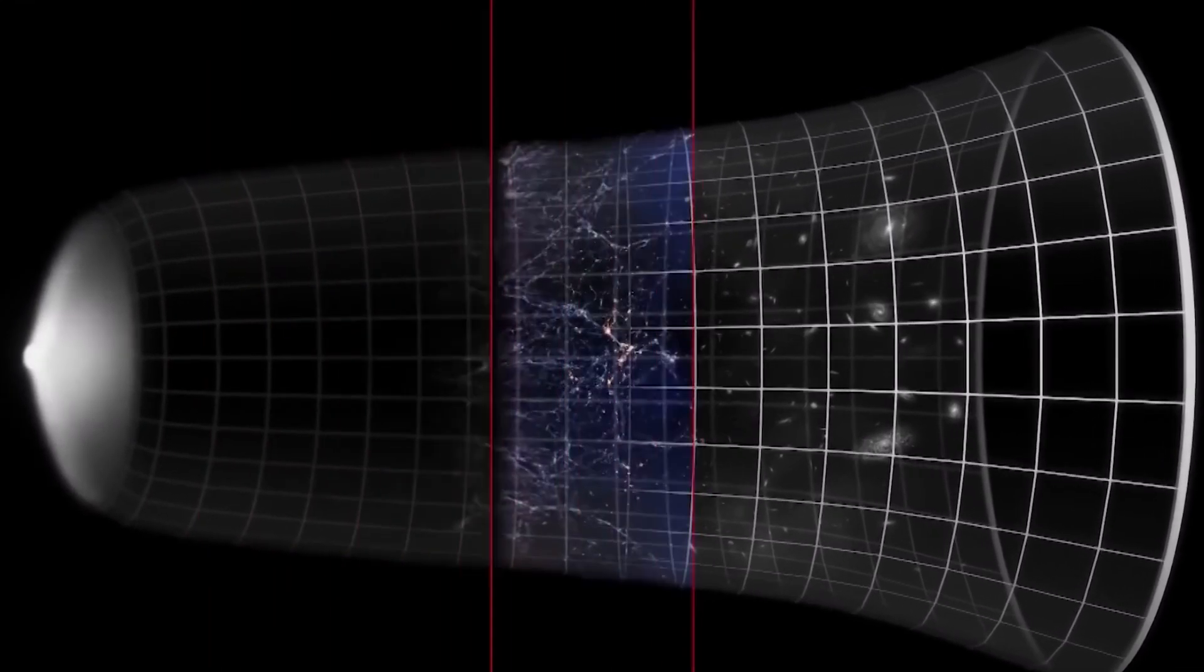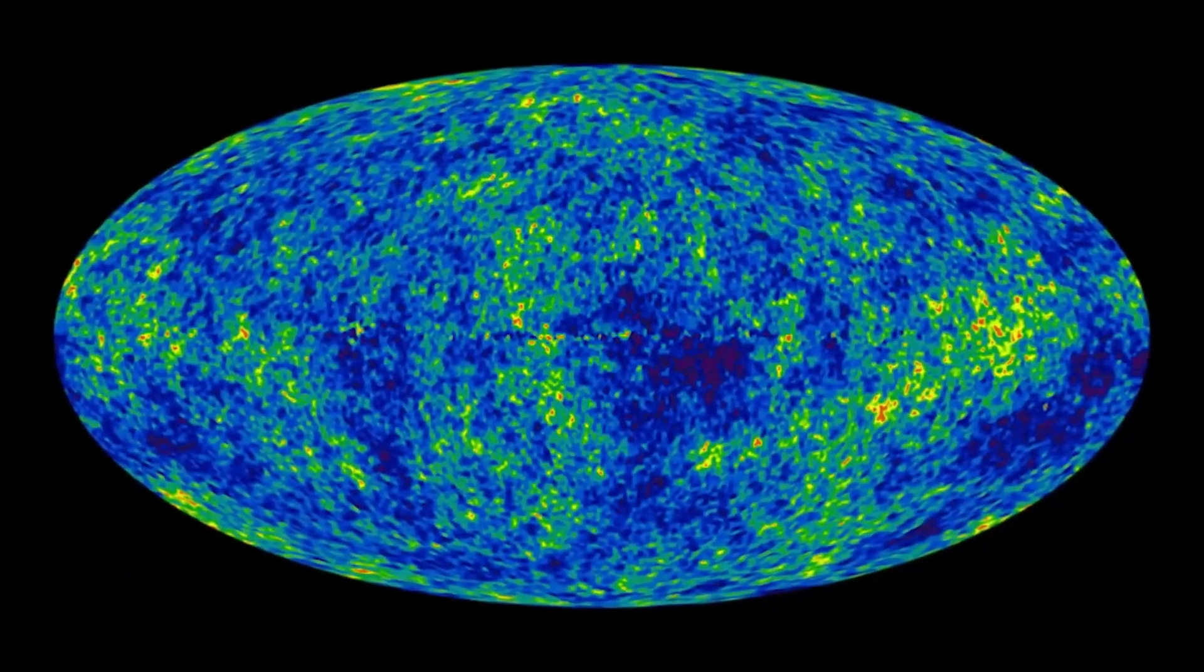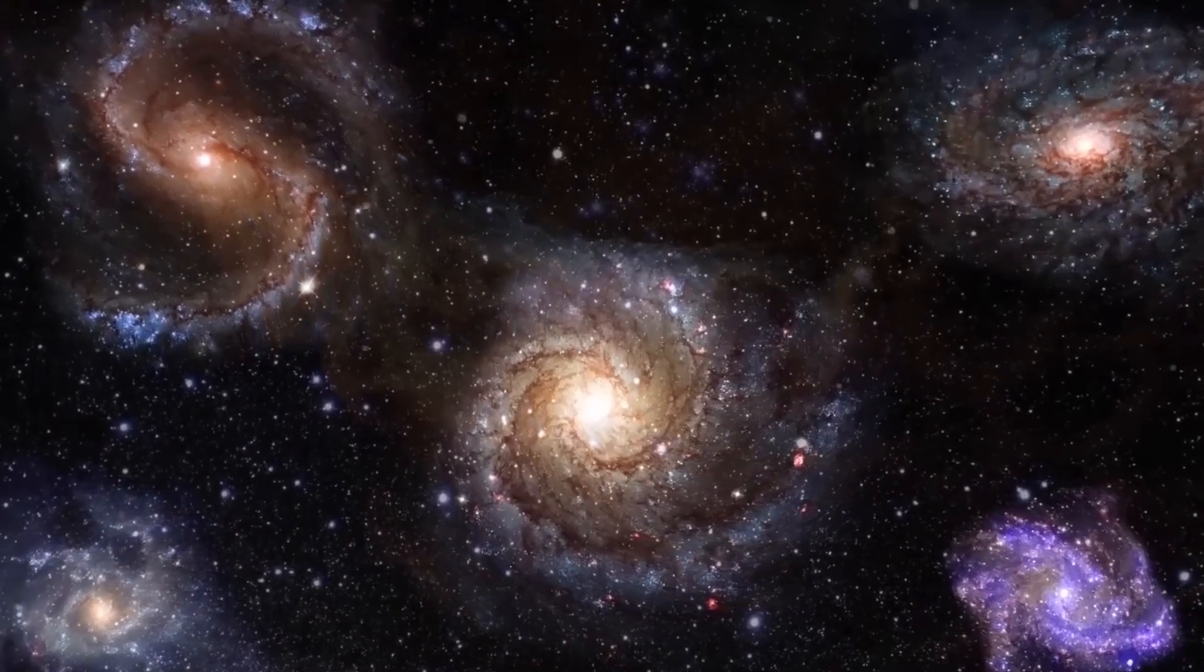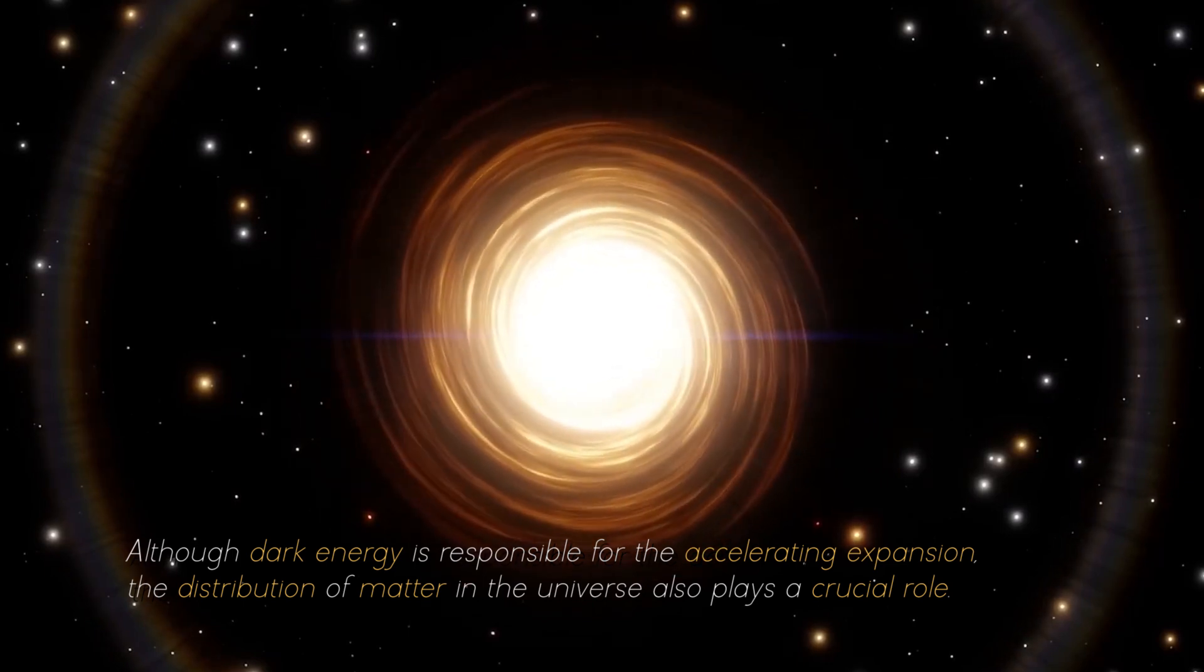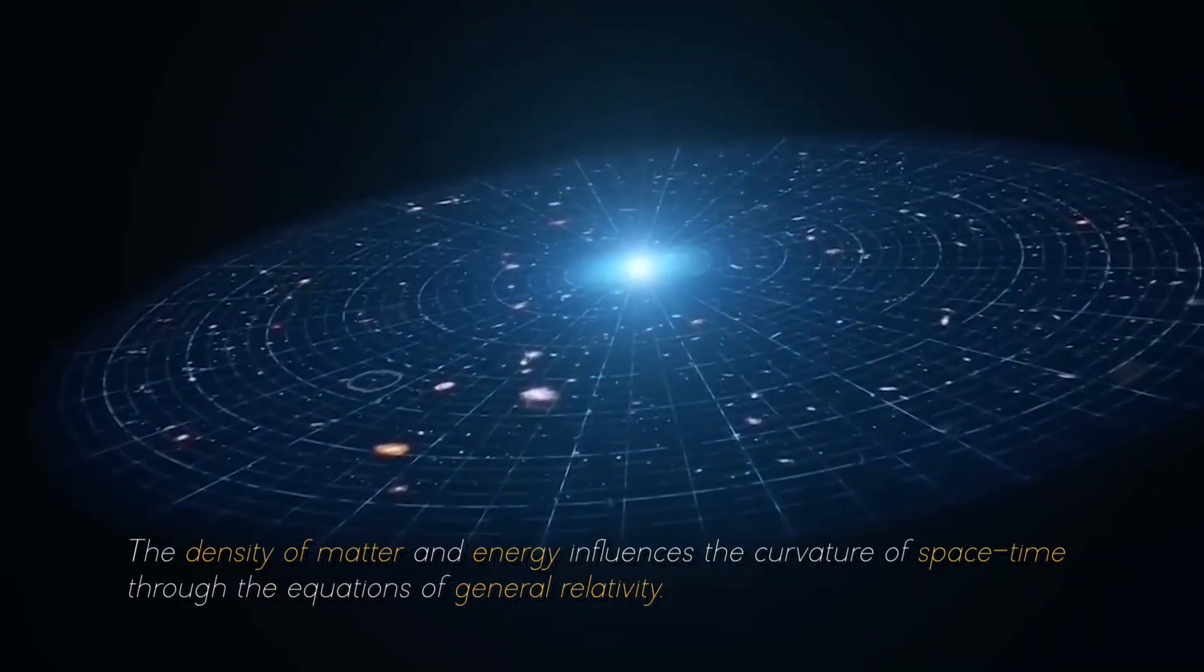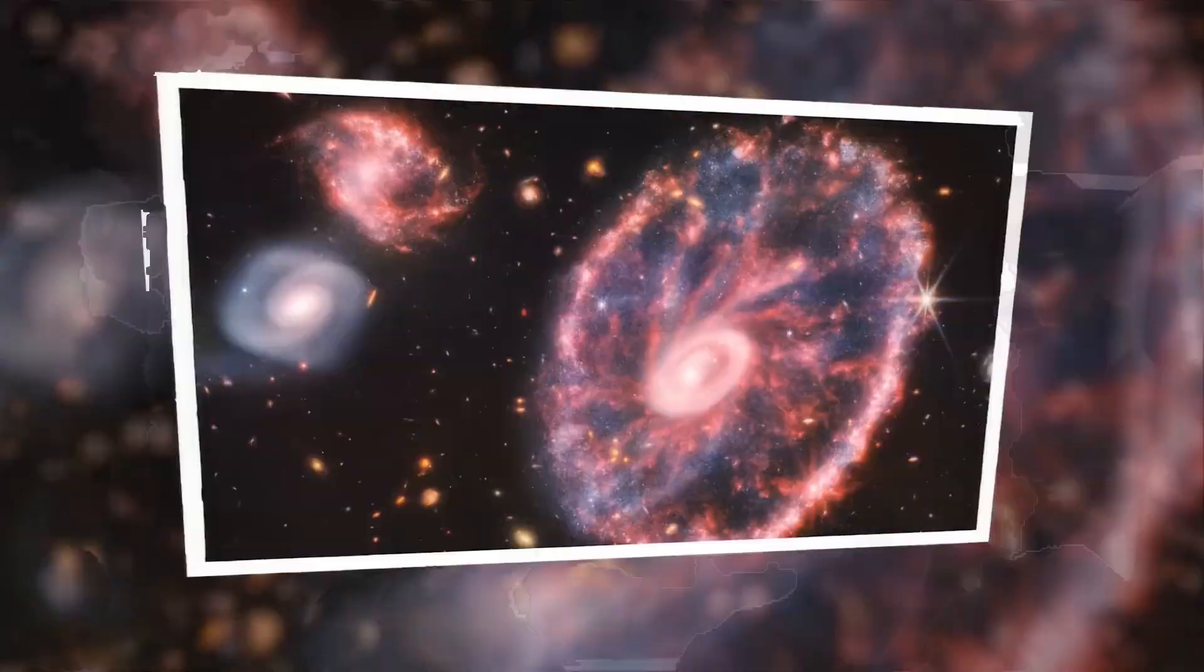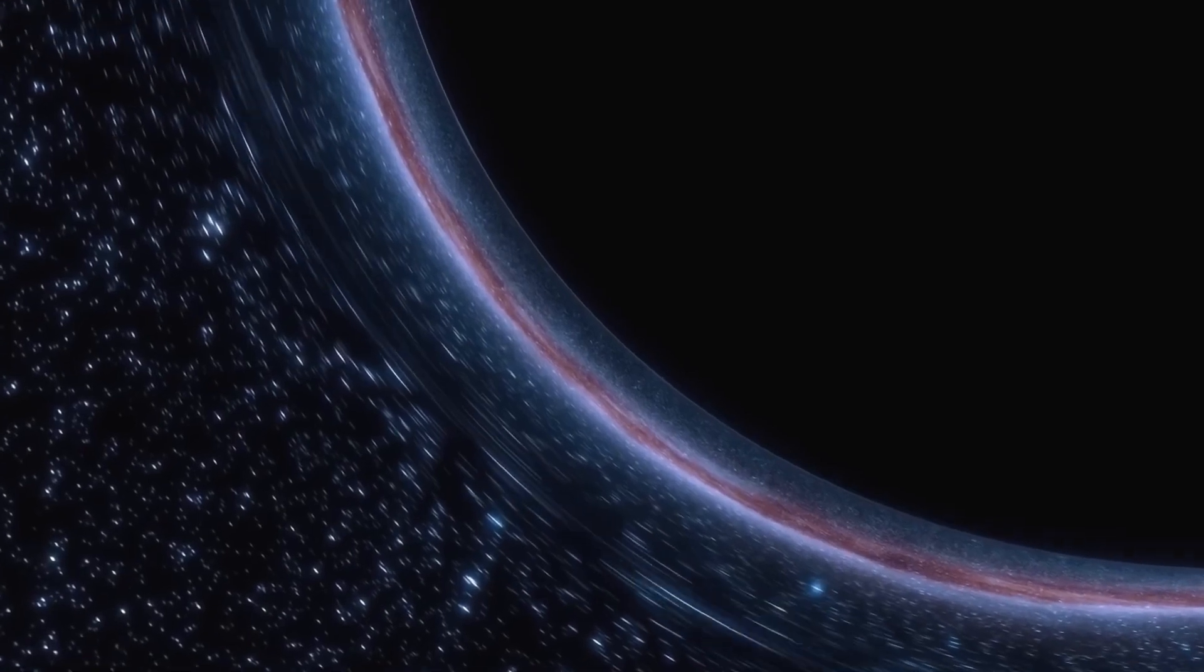This repulsive force is generated by dark energy, which is uniformly distributed in space and exerts a negative pressure. The precise nature of dark energy remains one of the greatest mysteries in modern cosmology, and scientists are actively investigating its characteristics. Although dark energy is responsible for the accelerating expansion, the distribution of matter in the universe also plays a crucial role. The density of matter and energy influences the curvature of space-time through the equations of general relativity. Regions with higher density exert a stronger gravitational pull, which slows down the expansion of the cosmos. On the other hand, regions with lower density experience a weaker gravitational attraction and contribute to the overall expansion of the universe.